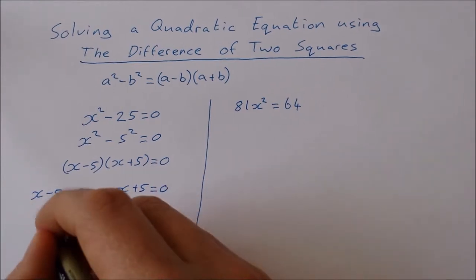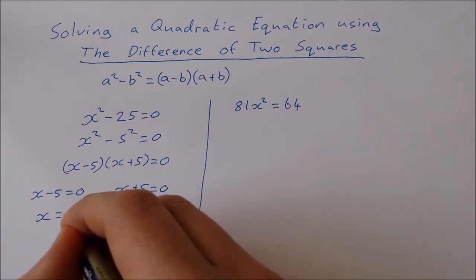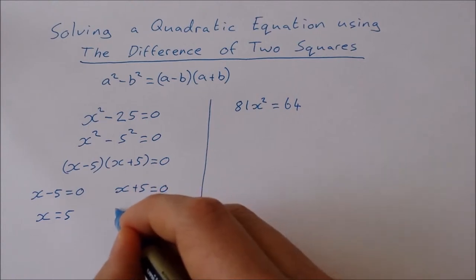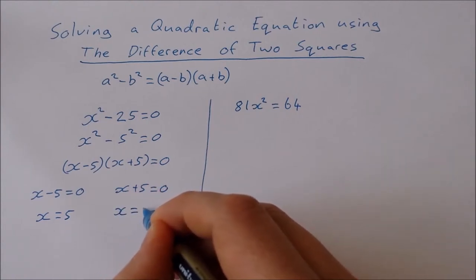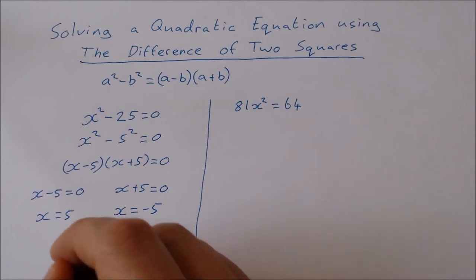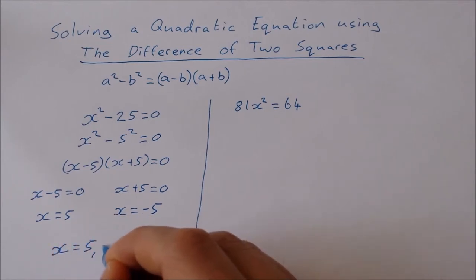Add 5 to both sides here, I get x equals 5. Subtract 5 from both sides here, I get x equals minus 5. So my two solutions are x equals 5 and minus 5.